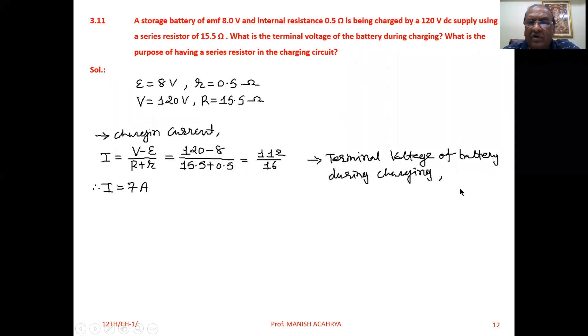Now, terminal voltage of the battery during charging: During the charging process, through the battery the current flows in the opposite direction compared to when the battery is in use. When in use, in the outer circuit the current flows from the positive terminal to the negative terminal, and through the battery from negative to positive. But now an external supply voltage of 120V is connected to it for the charging process.